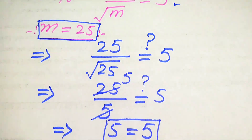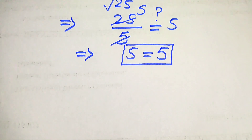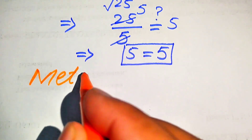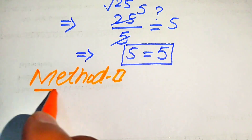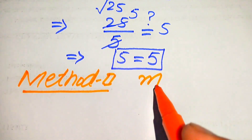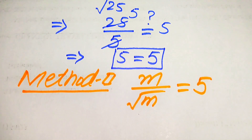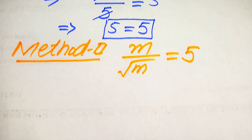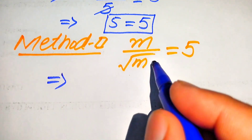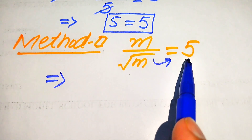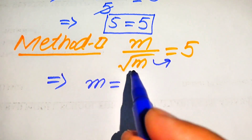So m equals 25 is the only solution found by Method 1. Now we solve the problem again using a second method. The given equation is m divided by square root of m equals 5. In Method 2 we use a different technique: we move square root of m to the right-hand side, where it becomes multiplied by 5, giving m equals 5 times square root of m.